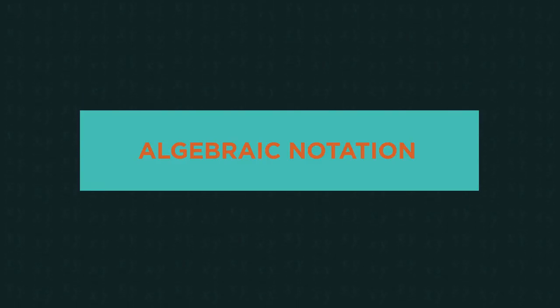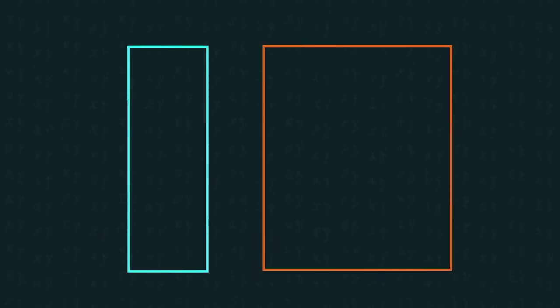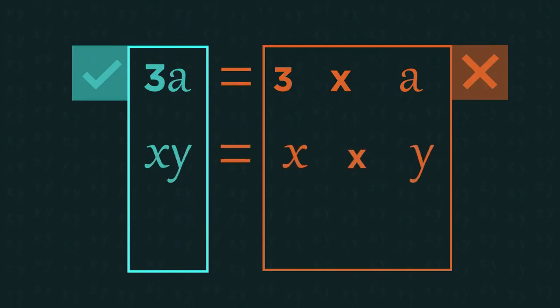In the algebraic notation video, we discovered that we always use a curly x for the letter. We don't really use a multiplication sign, so 3a means 3 multiplied by a, and xy means x multiplied by y. Instead of using the division sign, we use fractions.